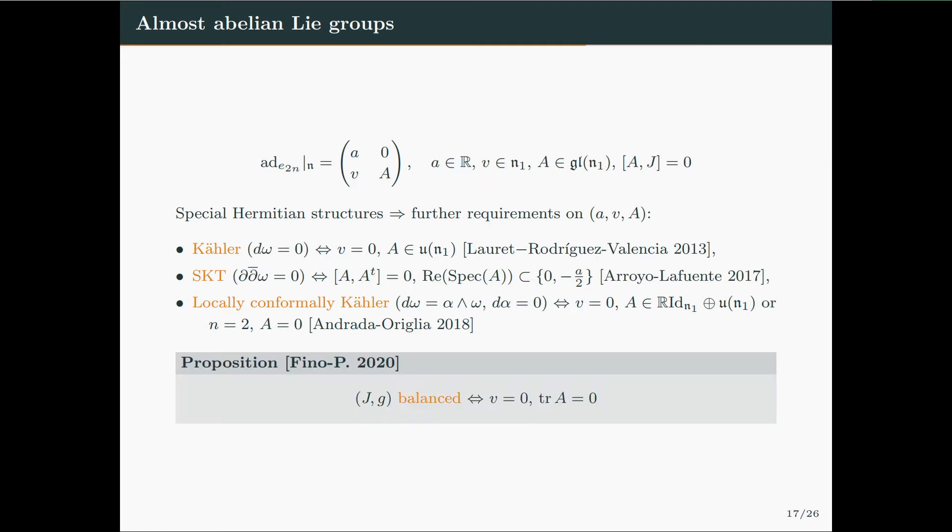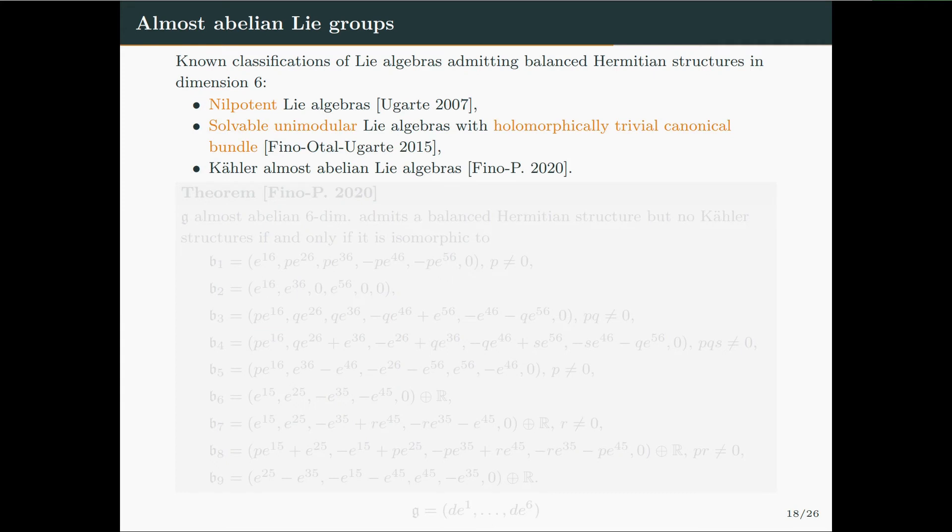So, in our paper, we proved that a Hermitian structure on an almost abelian Lie group is balanced if and only if, in this context, v vanishes and A is traceless. So using this, one can classify almost abelian Lie algebras admitting balanced Hermitian structure.